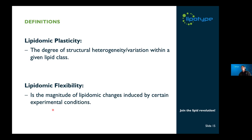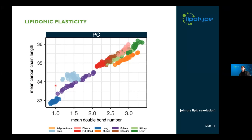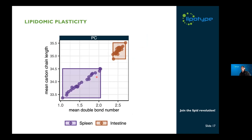Let's start with lipidomic plasticity. When we calculate weighted averages of double bond numbers for each lipid class — and here we show the weighted mean carbon chain length of individual lipid molecules within a given sample — we see a very interesting pattern. For some samples, there is a very narrow distribution of double bond numbers and carbon chain length, and for others, there is quite a wide spread of this distribution. We therefore calculated the range for the spread for the different lipid classes across sample types.